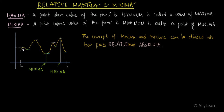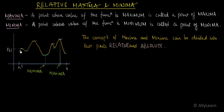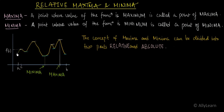You have to find a point which has the largest value in its neighborhood. Consider a point C with function value f(C). If to the left and right of C, the function values are less than f(C), then C is a point of relative maxima. You don't have to go too far right — just a little to the left and right. If this point is the maximum in its immediate neighborhood, you call it relative maxima.